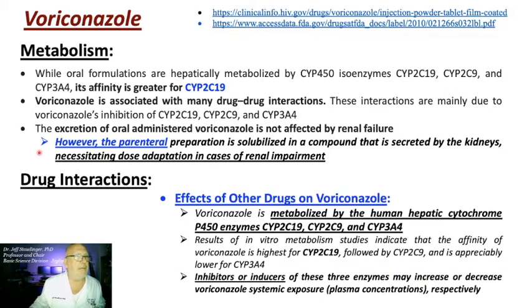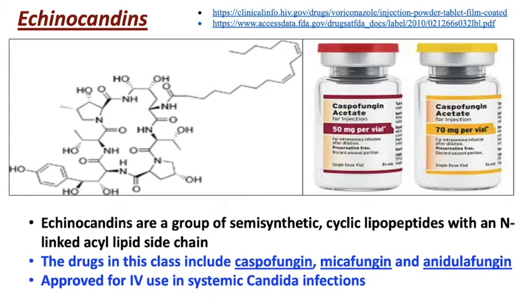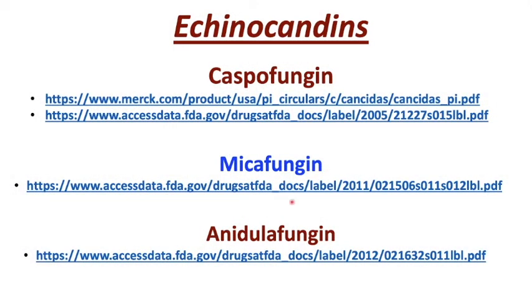The echinocandins are a group of semi-synthetic cyclic lipopeptides with an N-linked acyl lipid side chain. The drugs in this class include caspofungin, micafungin, and anidulafungin, approved for IV use in systemic Candida infections. This is a new class of drugs that act by inhibition of beta-1,3-D-glucan synthase — a key enzyme necessary for the integrity of fungal cell walls. Glucan synthase forms glucan, a major component of the fungal cell wall, which is damaged by these three agents.